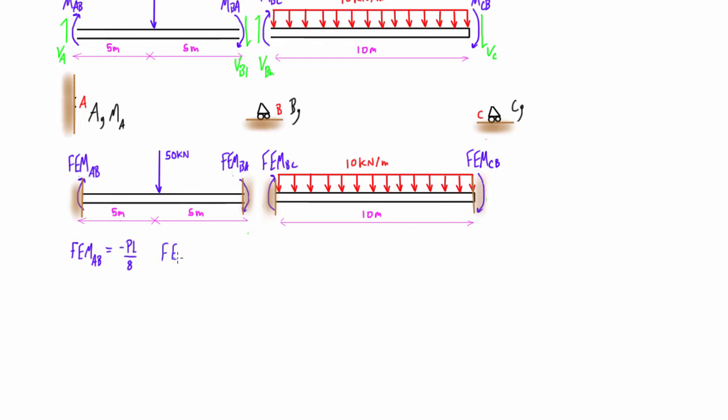And then you also have FEMBA, and this one would just be positive PL over eight. Again where P is that point load, L is the length of that span.